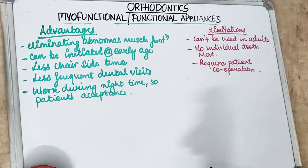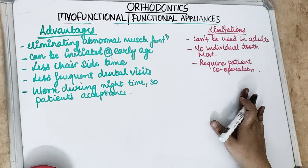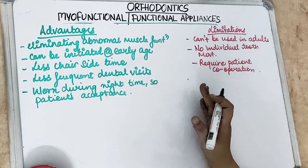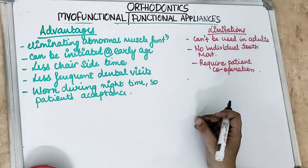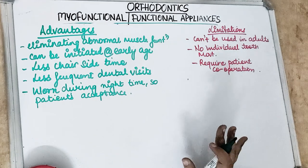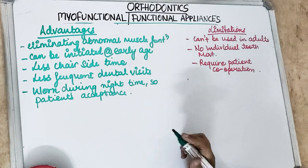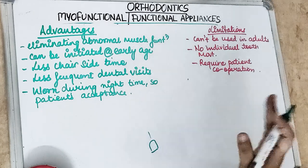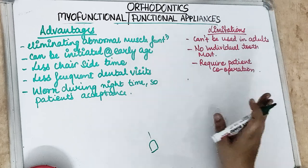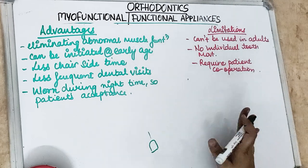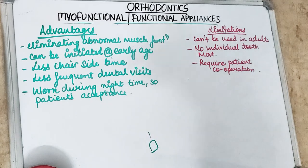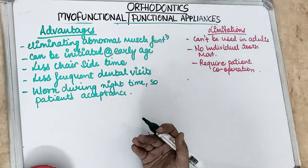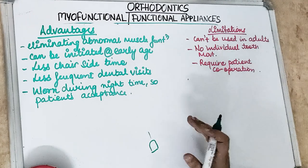Limitations of myofunctional appliances: they cannot be used in adult patients in whom growth has stopped. They cannot bring about individual tooth movement — unlike active orthodontic appliances where intrusion, extrusion, and specific tooth movements are possible. Patient cooperation is essential for the success of myofunctional appliances — if the patient is not wearing the appliance, results will not be seen.